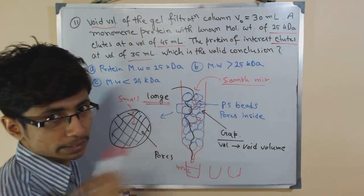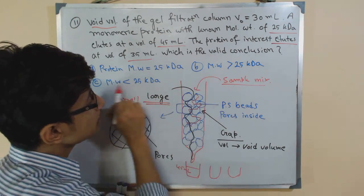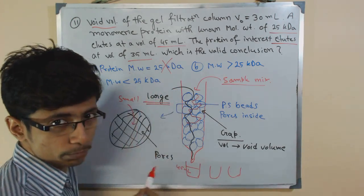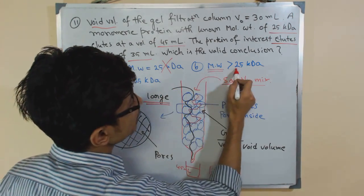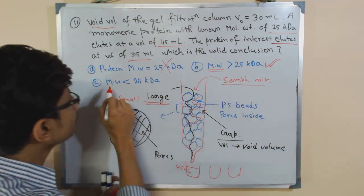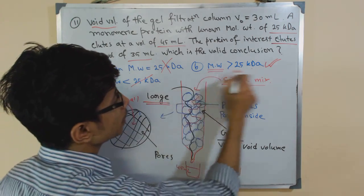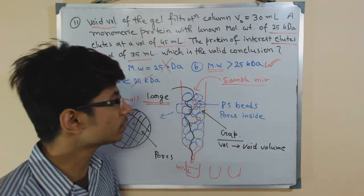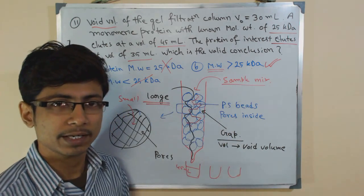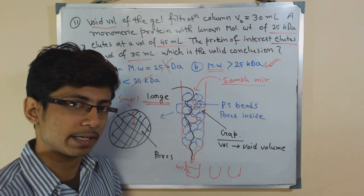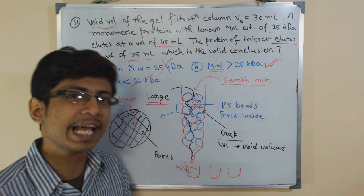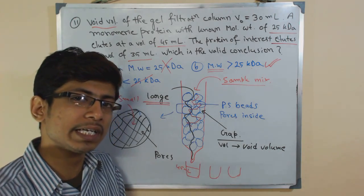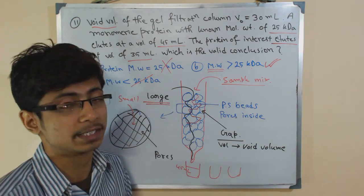Our protein of interest eludes faster than the known protein that is 25 kD. This tells us that our protein is larger than the protein we know of that is 25 kD. So the molecular weight of our protein equals to 25 kD? No. Greater than 25 kD? Yes, that is correct. Less than 25 kD? No. The valid conclusion is the molecular weight of our unknown protein is greater than the known protein molecular weight. Using this study you cannot tell exactly the molecular weight but we can say the comparative nature - whether this protein has more molecular weight than the known protein or less.